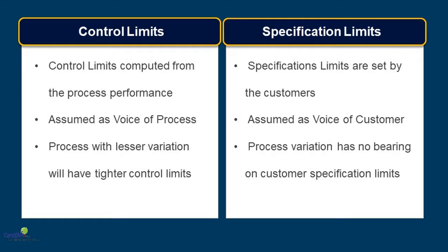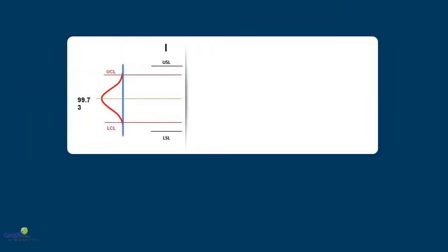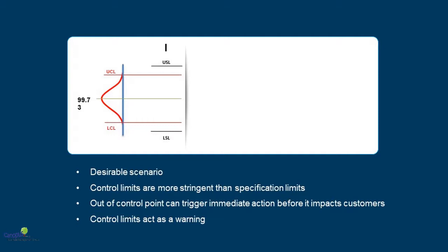So how can we use both control limits and specification limits to our favor? Let's take three different scenarios. Scenario 1 where the control limit is narrower and the specification limits are broader. This is the most desirable scenario because if a data point lies outside the control limit but within the specification limit, then we have an out of control which will trigger us to immediately take necessary actions before it impacts the customer. Because this data point hasn't breached the customer specification limits. So the control limits in this case are acting as a warning signal which is what they are meant to be. This is the most desirable situation.